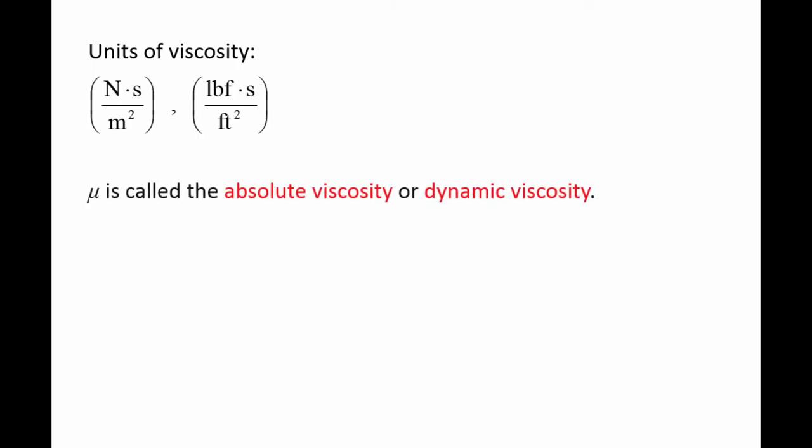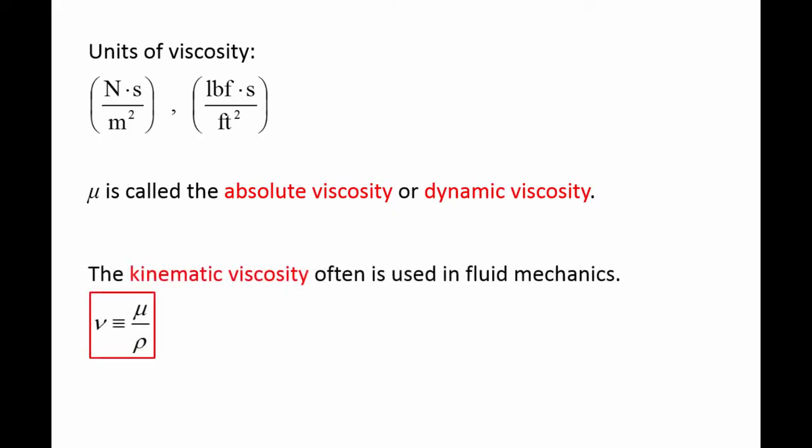The symbol mu is usually called the absolute viscosity or dynamic viscosity. The absolute viscosity mu, divided by the density rho, appears often in fluid mechanics and is defined as the variable nu, which is the kinematic viscosity.